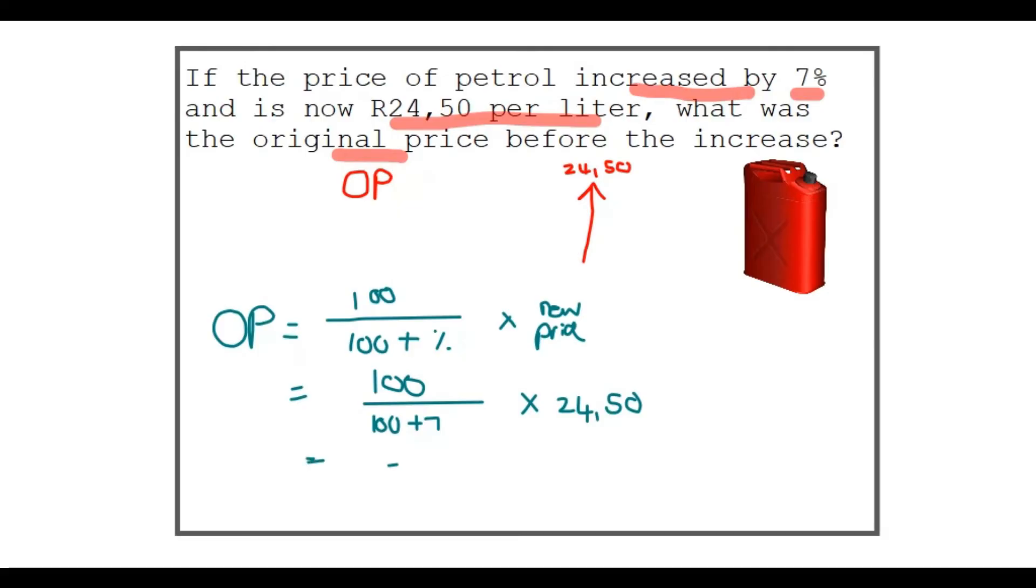This then becomes 100 over 107 multiplied by the 24.5, and the original price was 22 rand 90 cents. Does that make sense? Let's see. So I started out 22 rand 90 cents, then I added 7% to get 24 rand. Yeah, it makes a lot of sense.